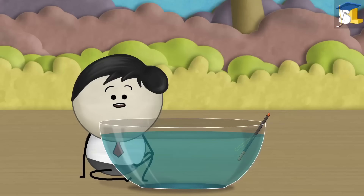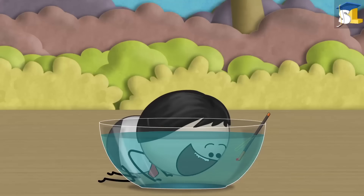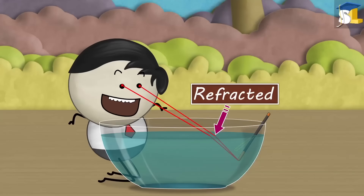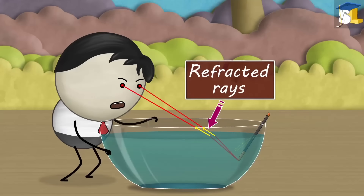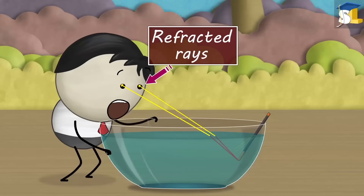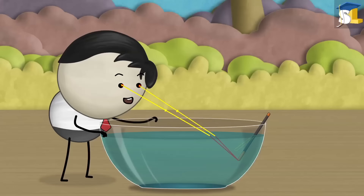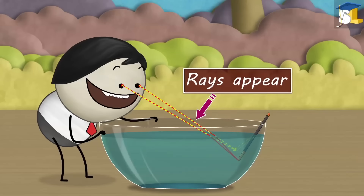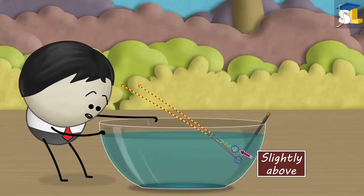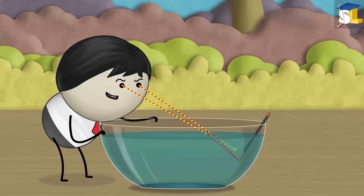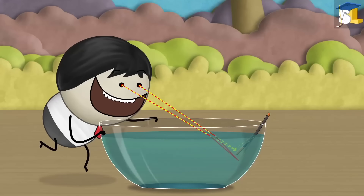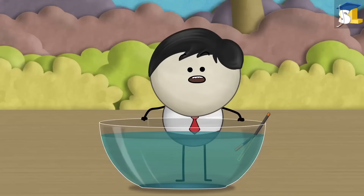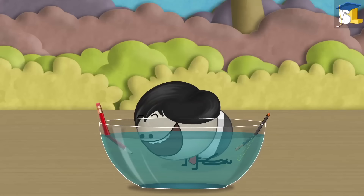When the light rays coming from the tip of the magic wand pass from water to air, they change their direction — that is, they get refracted. When these refracted rays reach our eyes, our eyes trace them backward as straight lines. Due to this, the rays appear to come from a point slightly above the original position. Hence, the magic wand appears to be bent in water. Similarly, like the magic wand, a pencil appears to be bent in water.